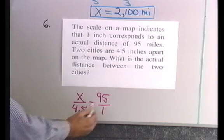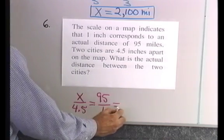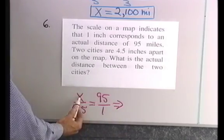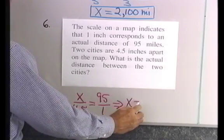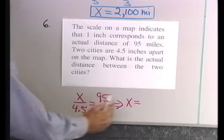I'm going to use my means extremes property to multiply x times 1. Let me do it over here. So this implies that x times 1 is x is equal to 4.5 times 95.